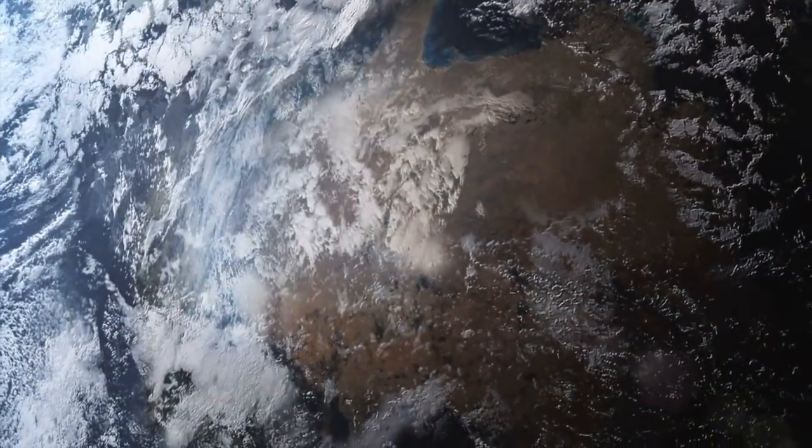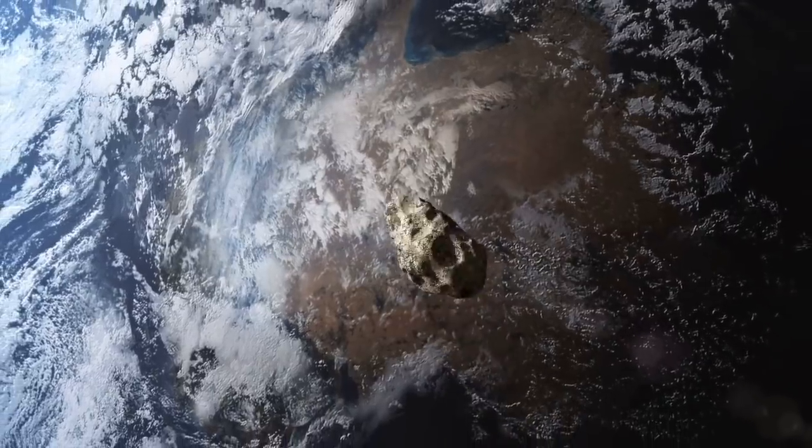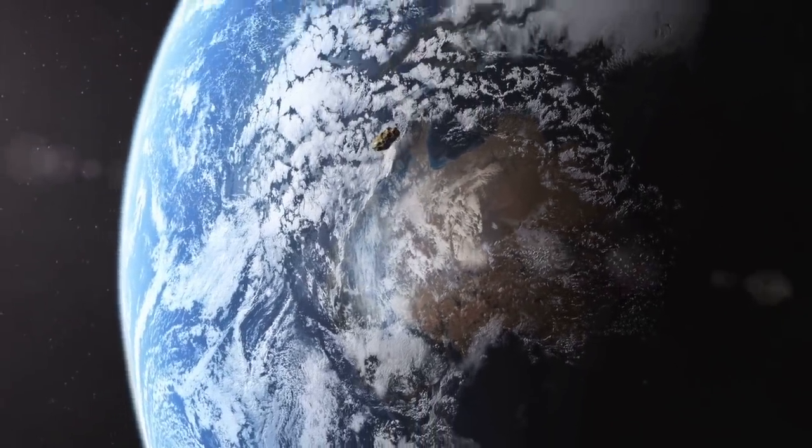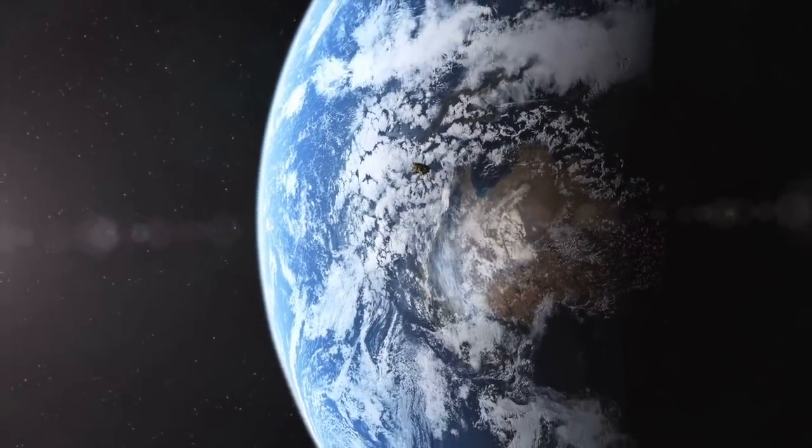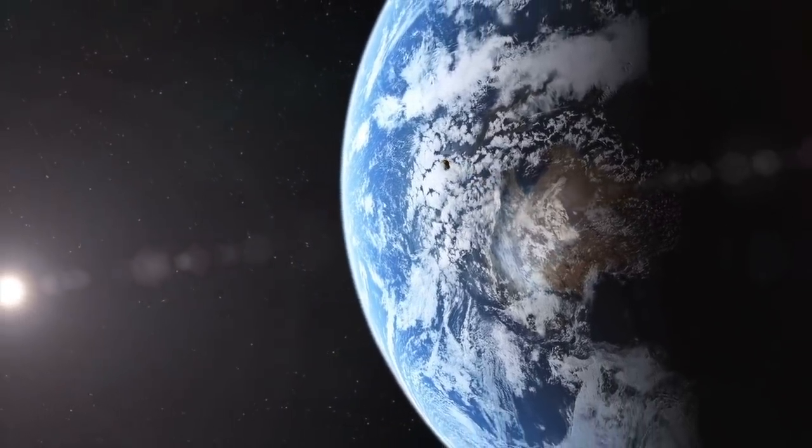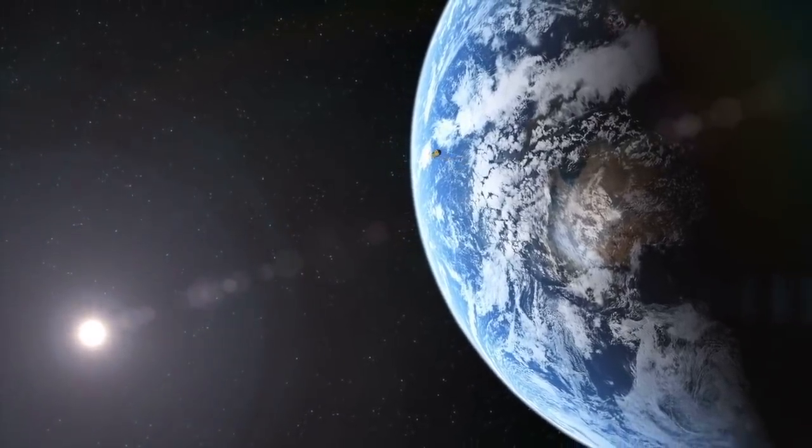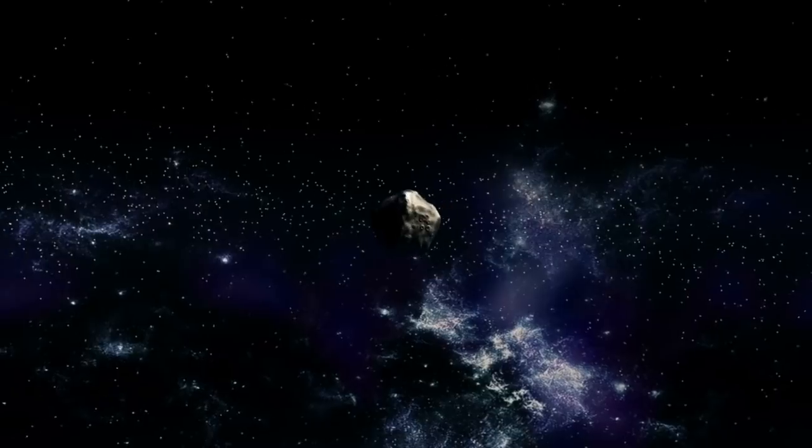However, despite the mainstream media picking up this information, researchers have said they knew it wouldn't make contact with our planet, further saying that it's much smaller than the asteroid that took out the dinosaurs. The celestial object came close to our planet on the 15th of February. NASA made the following statement.